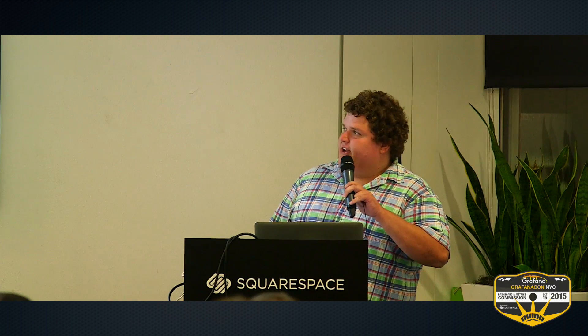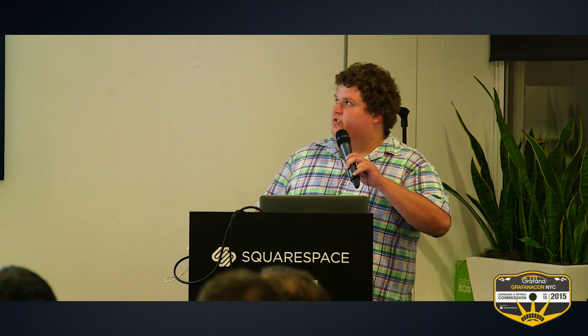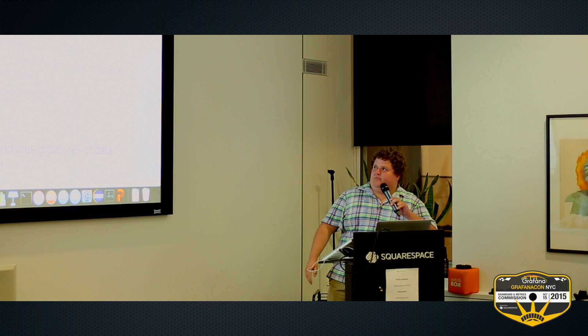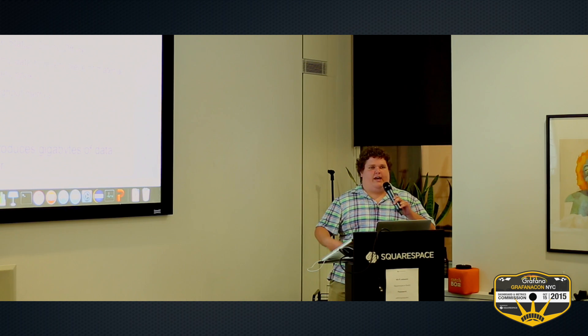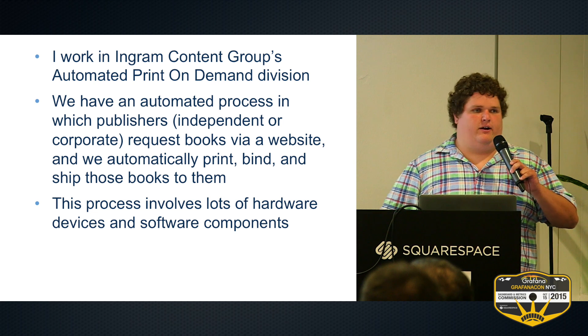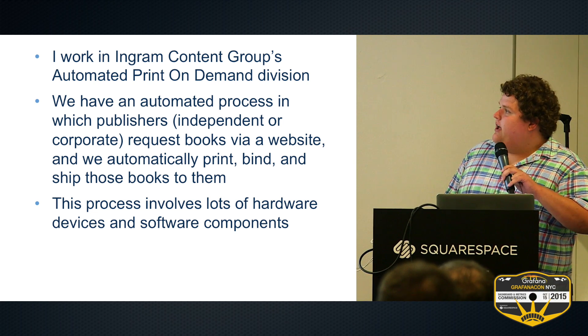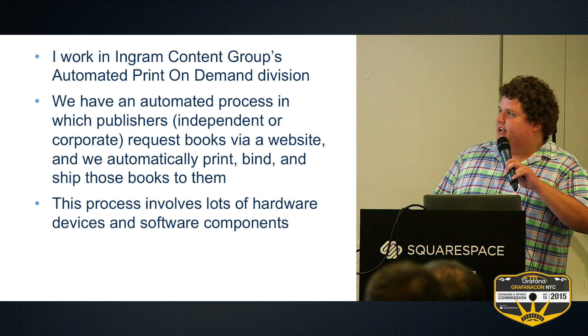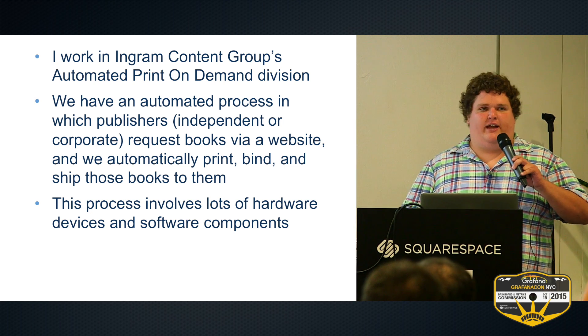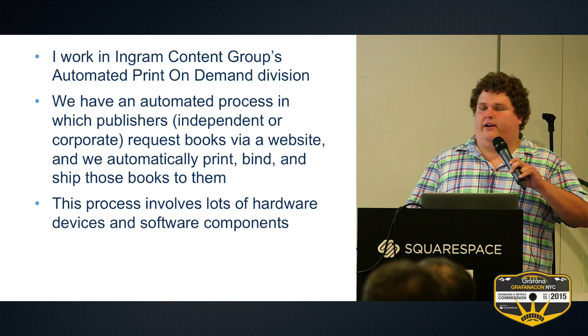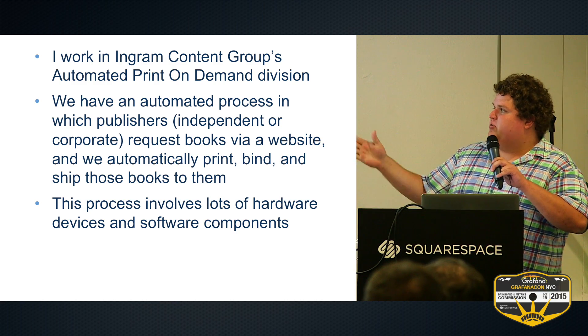We have the collection piece down. We collect different things using a homegrown, home-programmed approach — like device status, tracking data for every piece of material for every book. We do throughput metrics like how many books are we producing an hour, what has this device produced, et cetera. Just to give you an idea, for every plant that we have — and we have three plants right now on this system — we produce gigabytes of data an hour. So that's kind of our scale.